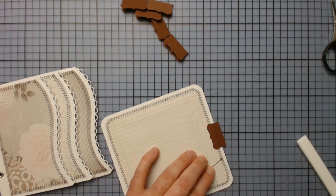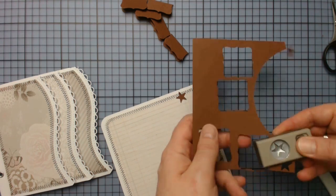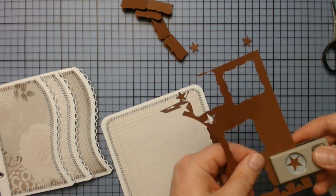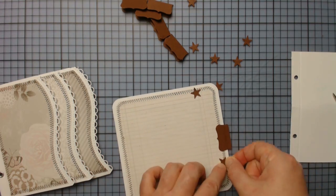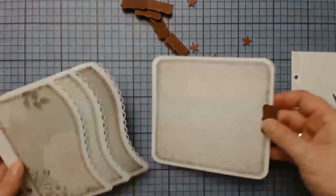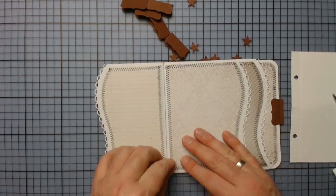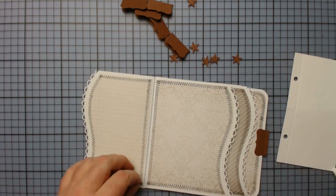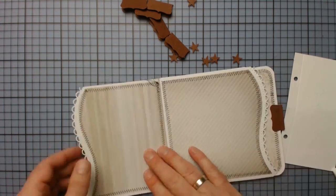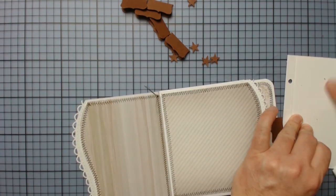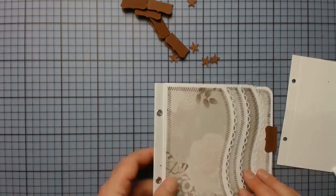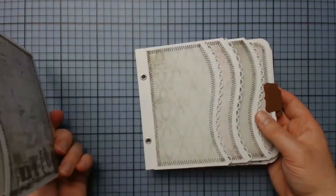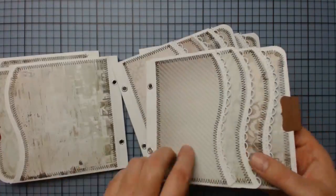The loose ends of the threads on the mats as well as on the smaller pages will simply be covered with some little punch-out stars and thereby secured. And so the page is done. Overall we will need six of these.